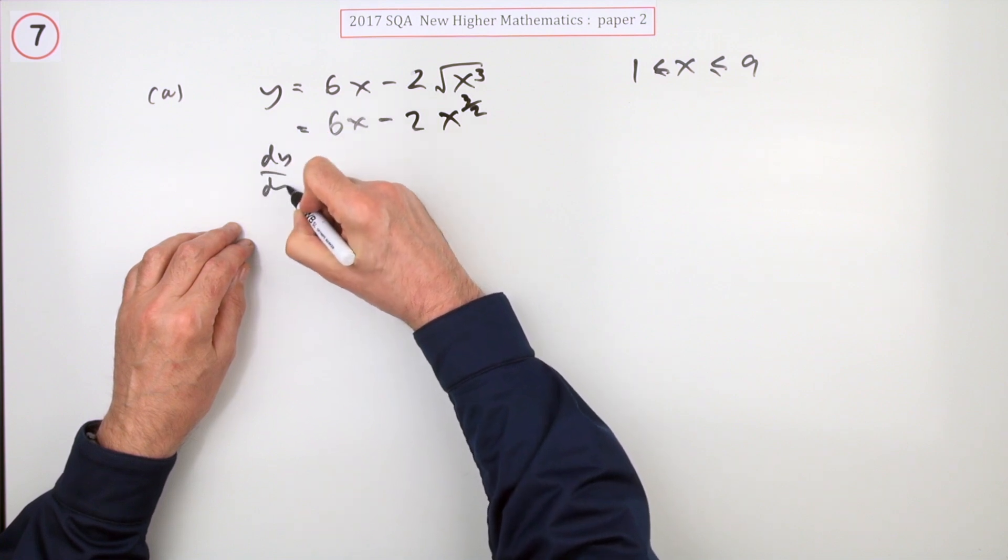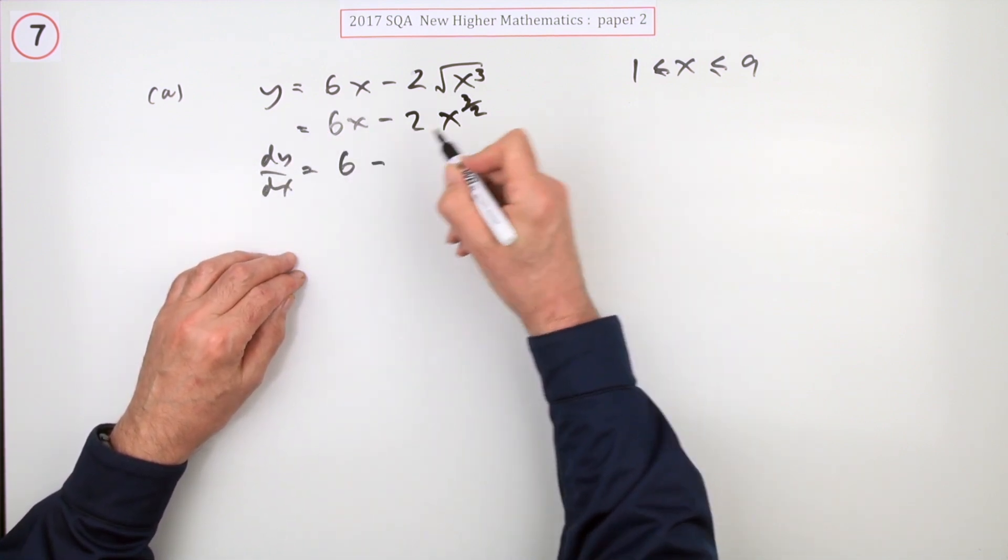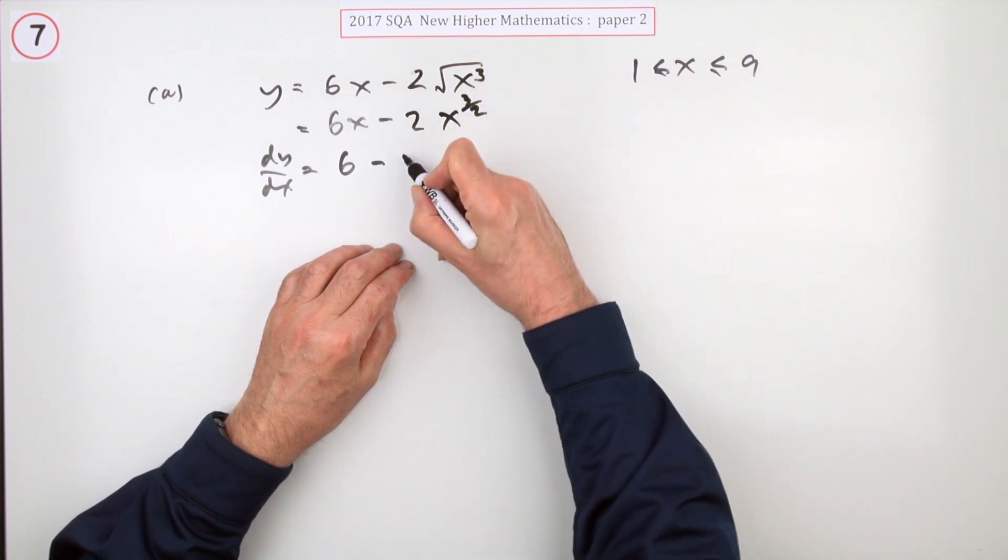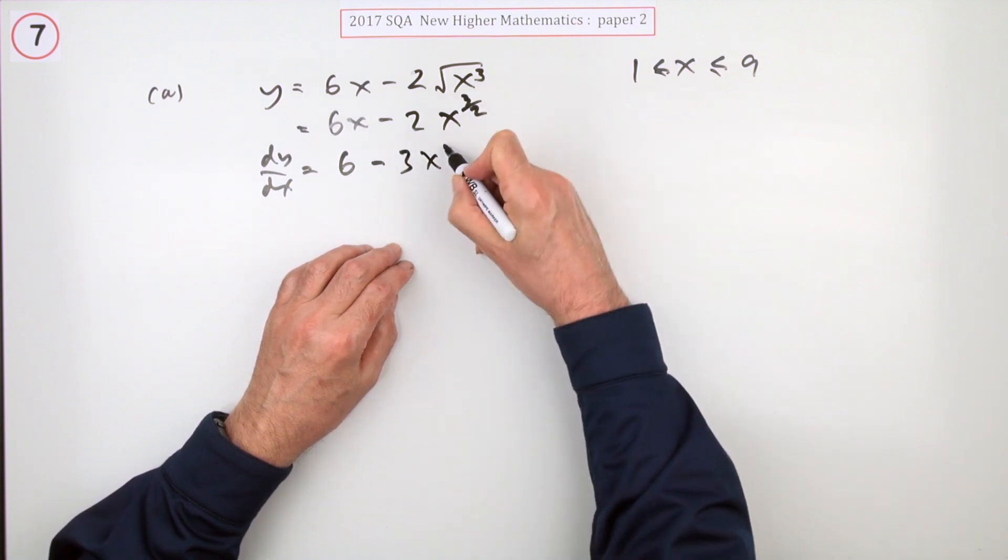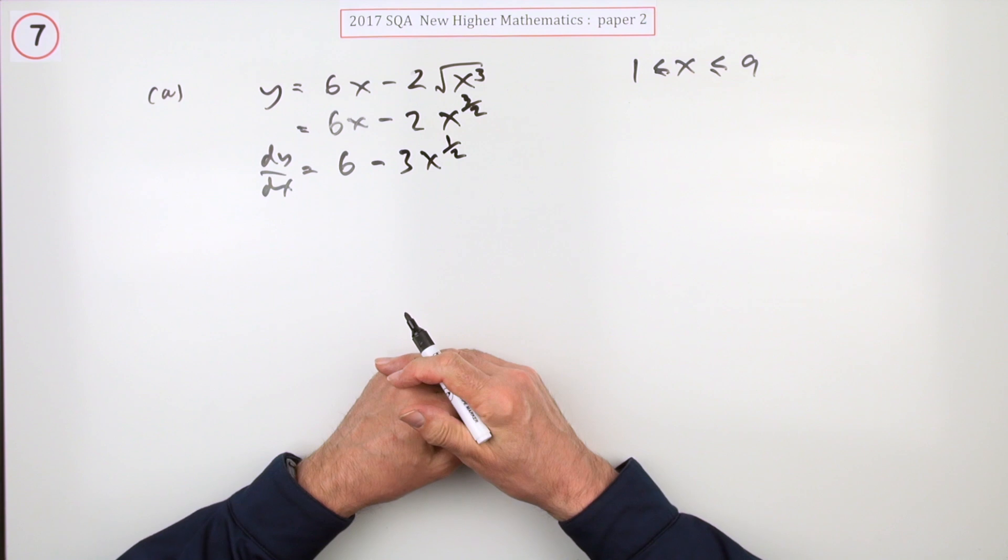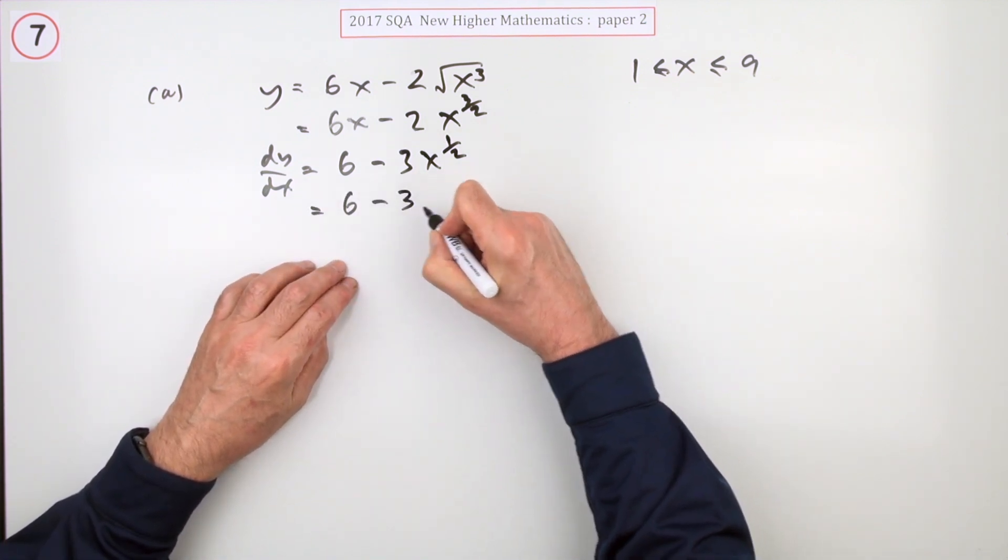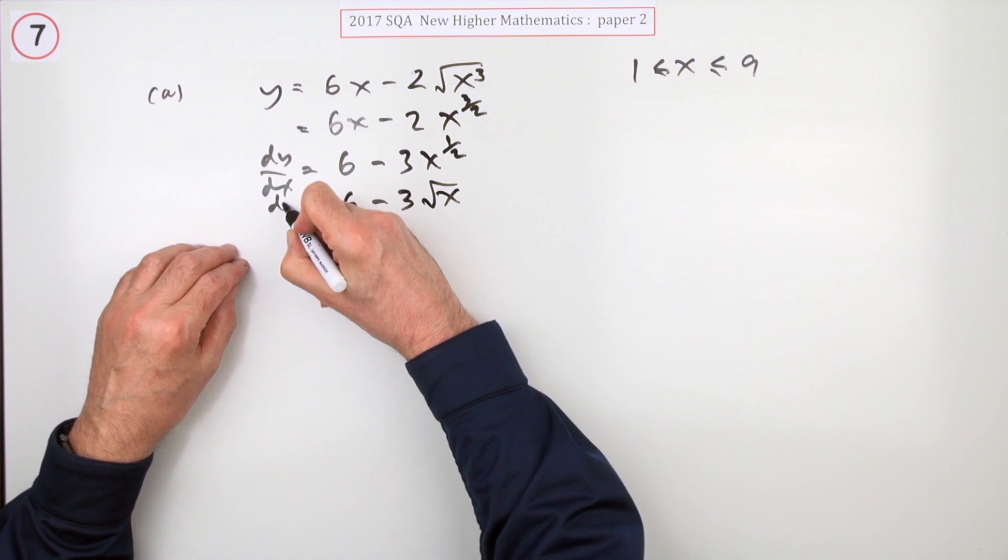Now differentiate it. So I'll just go to six and that part will be multiplied by the power, so two times three upon two is just three. Take one off the power and it drops to a nice little friendly a half. And I'll just write that again as 6 minus 3√x for the derivative.